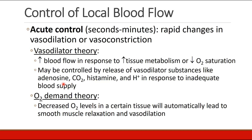There are several theories to explain this. One is that vasodilators are responsible. When tissue metabolism increases or oxygen saturation goes down, blood flow goes up because vasodilators are released — like adenosine, carbon dioxide, or histamine — in response to inadequate blood supply.